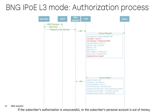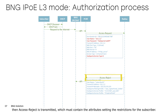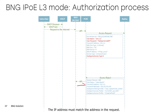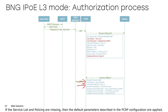If the subscriber's authorization is unsuccessful, or the subscriber's personal account is out of money, then access reject is transmitted, which must contain the attributes setting the restrictions for the subscriber. The IP address must match the address in the request, and the user name defines the subscriber's username. If the service list and policing are missing, then the default parameters described in the PCRF configuration are applied.